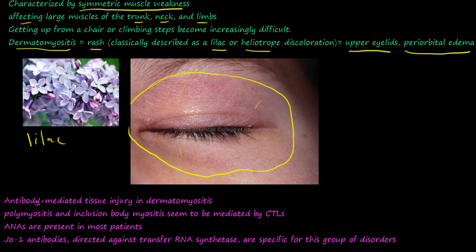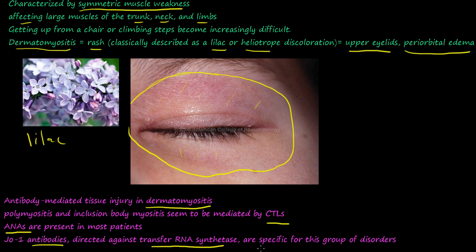Antibody-mediated tissue injury is thought to be the mechanism in dermatomyositis, while polymyositis and inclusion body myositis appear to be more mediated by cytotoxic lymphocytes. ANAs are also present in most patients, and they have a JO1 antibody directed against the transfer RNA synthetase enzyme. The JO1 antibodies are very specific for this group of disorders.